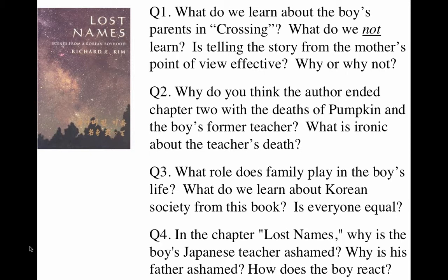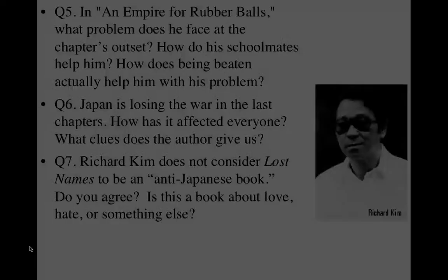That's some background, and it brings us to our novel. There are seven chapters, each of which could be read on its own, though they work very well together. I've given you seven questions to think about — not necessarily one per chapter — but things I hope will get you thinking about the bigger issues we'll discuss when we meet together. The first chapter, as I mentioned, is told from the perspective of the boy's mother rather than the boy himself. I ask you to think about whether that's effective and what we do or don't learn from that. Regarding question three — not necessarily tied to chapter three — I'm asking you to think about the role of family throughout the book and how it teaches us things about traditional Korean society as well.